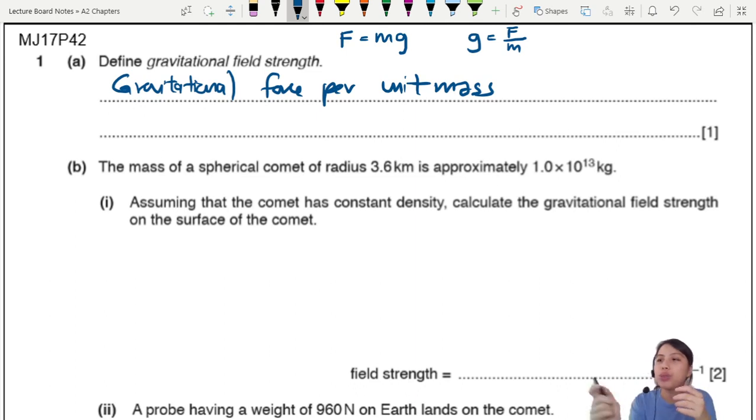In part 2 we have a mass of a spherical comet of radius 3.6 km, approximately 1.0 times 10 to the 13 kg - very heavy. Assuming the comet has a constant density, calculate the gravitational field strength on the surface of the comet.